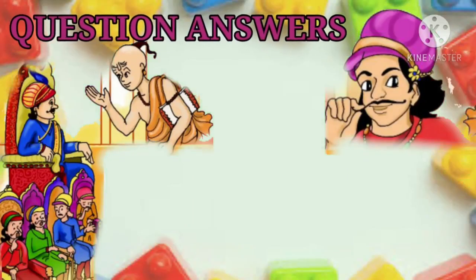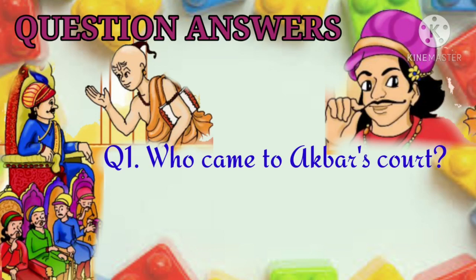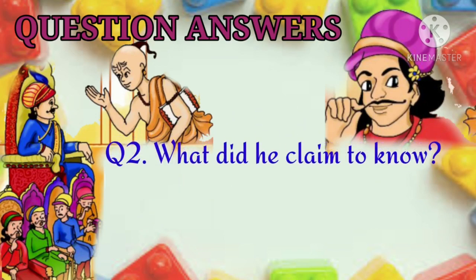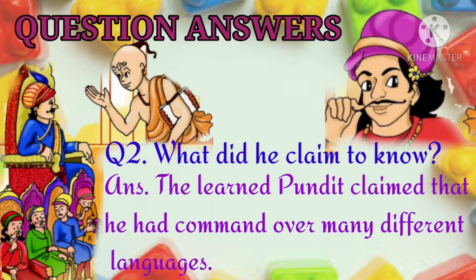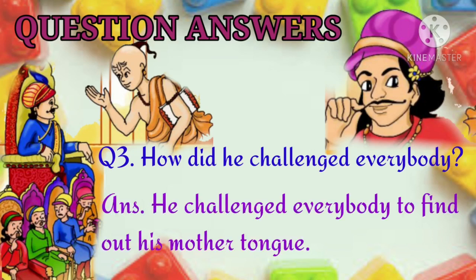Now let us move to the question and answer part. First question: Who came to Akbar's court? Answer: A learned pundit came to Akbar's court. Next question: What did he claim to know? Answer: The learned pundit claimed that he had command over many different languages. Next question: How did he challenge everybody? Answer: He challenged everybody to find out his mother tongue.